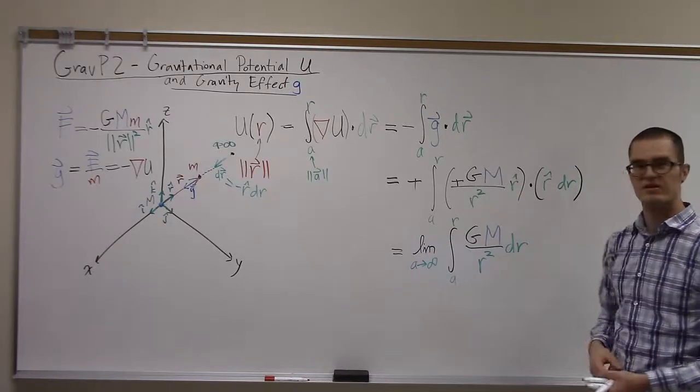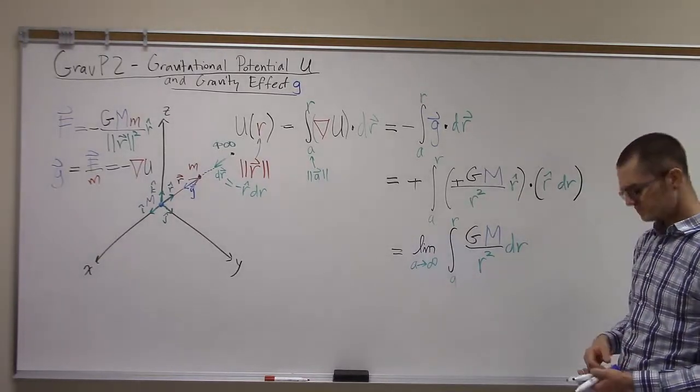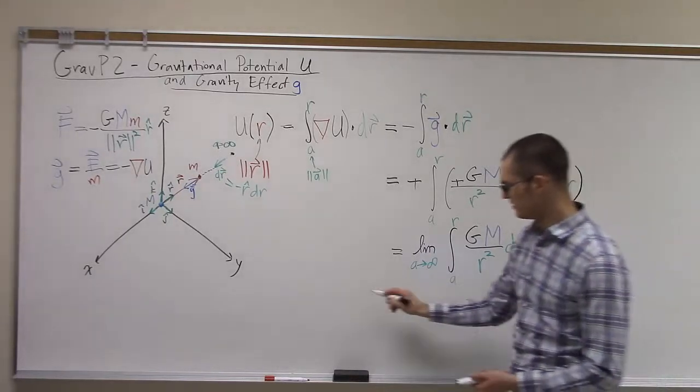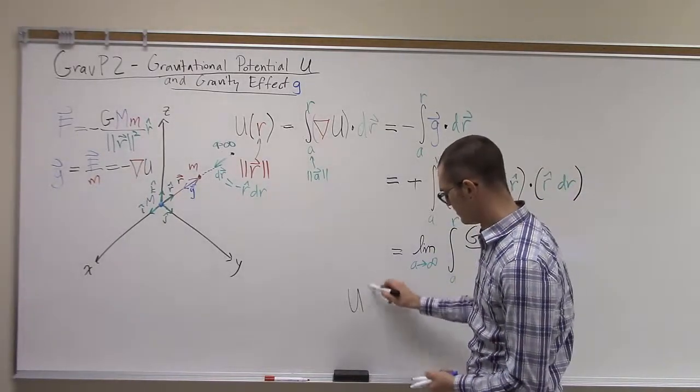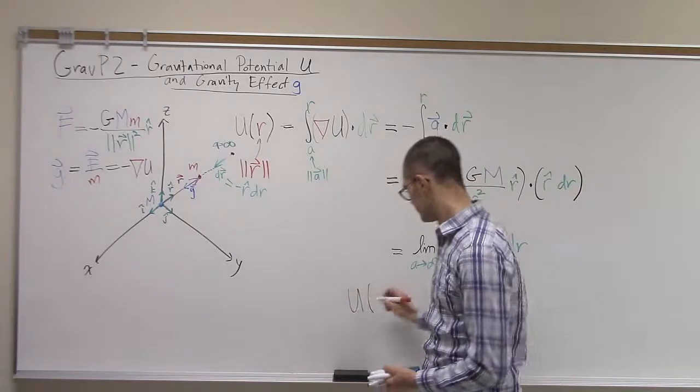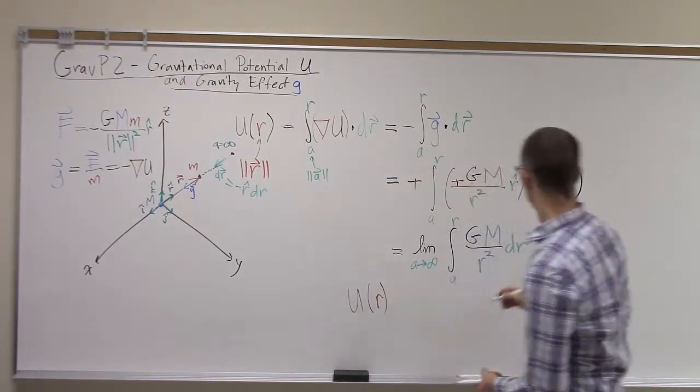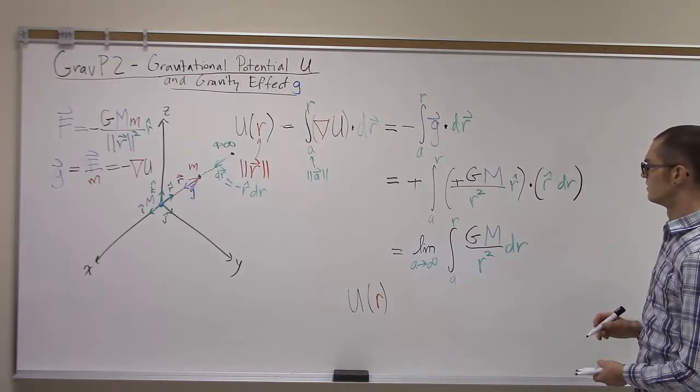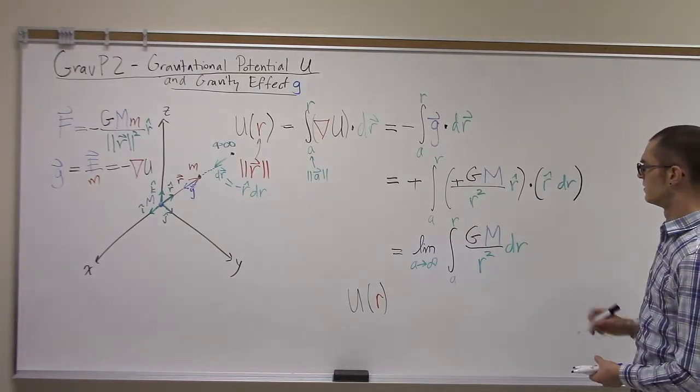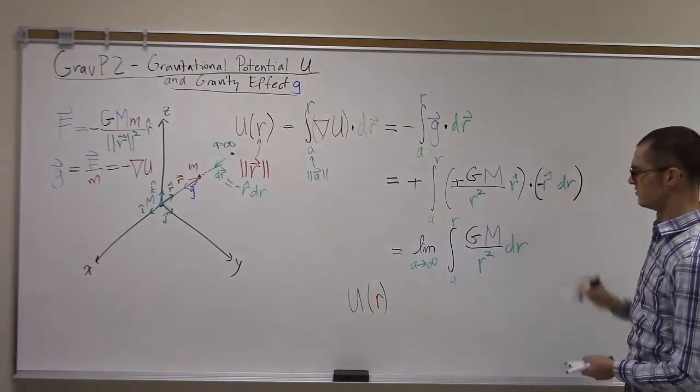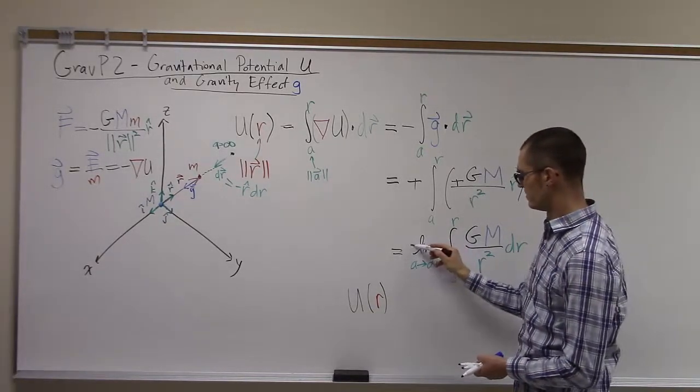So now this is an improper scalar integral. So if you work that out, you'll find out that U as a function of r. So we do have another negative sign right here. So we still have a negative here out front.